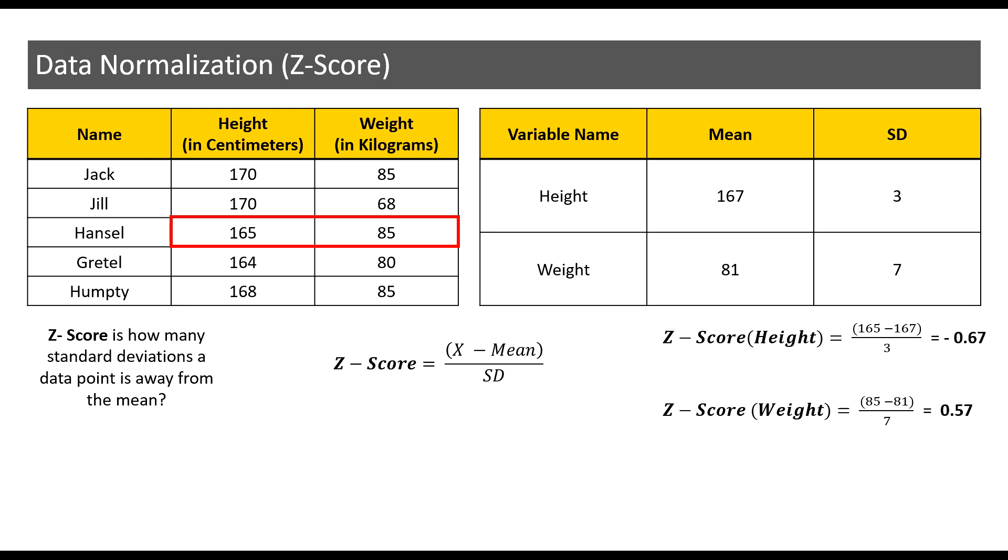Now we have two distinct values that are measured on the same scale, and the scale now is how many standard deviations a particular observation, which is Hansel in this case, is away from the mean. Hence the Z-score has helped adjust the scale in this dataset.